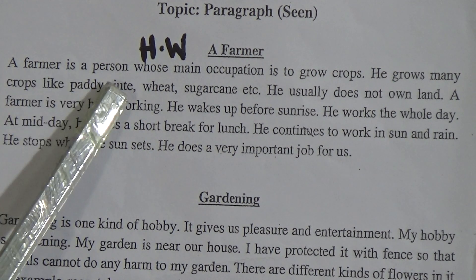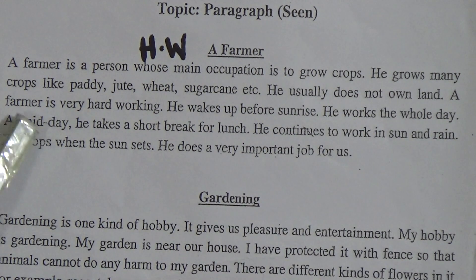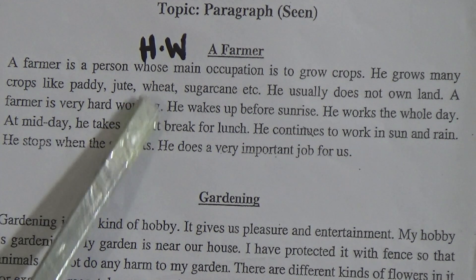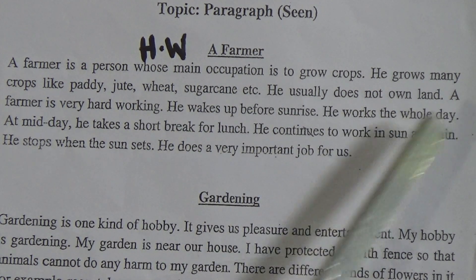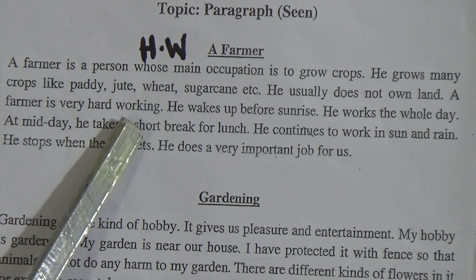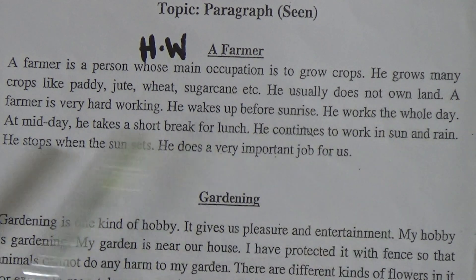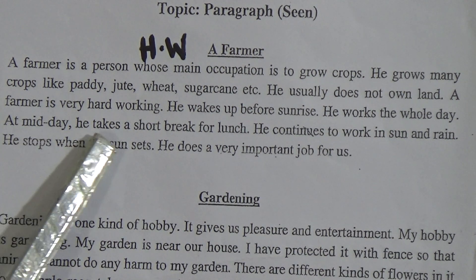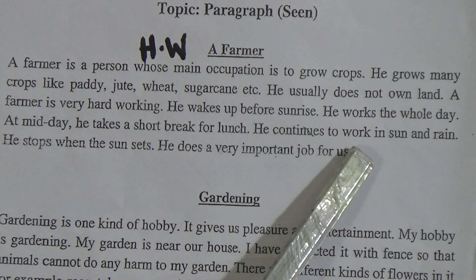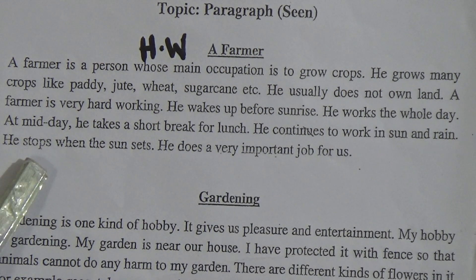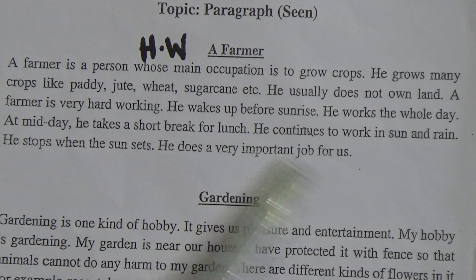A farmer is a person whose main occupation is to grow crops. He grows many crops like paddy, jute, wheat, sugarcane, etc. He usually does not own land. A farmer is very hardworking. He wakes up before sunrise. He works the whole day. At midday, he takes a short break for lunch. He continues to work in sun and rain. He stops when the sun sets. He does a very important job for us.